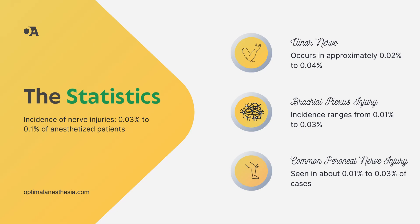Let's start with an overview. Nerve injuries, although rare, can significantly impact patient recovery and satisfaction. The most frequently encountered nerve injuries are the ulnar nerve, brachial plexus, and common peroneal nerve. Studies show these injuries occur in about 0.03% to 0.1% of anesthetized patients. Ulnar nerve injury is the most common, with an incidence of 0.02% to 0.04%. Brachial plexus injury has an incidence of 0.01% to 0.03%, and common peroneal nerve injury also has a 0.01% to 0.03% incidence.